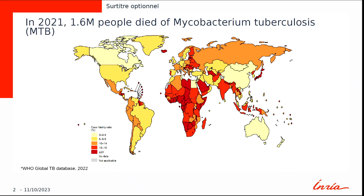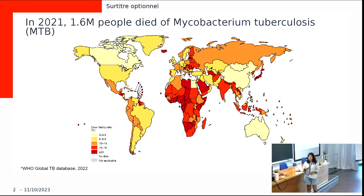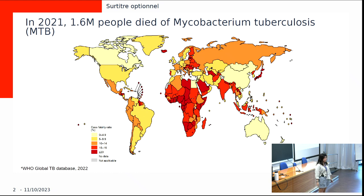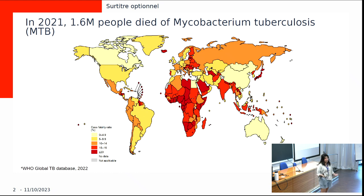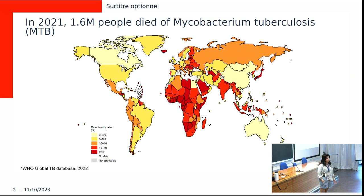For motivation and context: Mycobacterium tuberculosis is a bacterium that causes tuberculosis. It's a disease that kills more than 1.6 million people every year. It's present in almost every country, and despite all the efforts to eradicate it with vaccines and antibiotics, it's still present. And it's become more and more resistant to antibiotics, so it's a big problem.